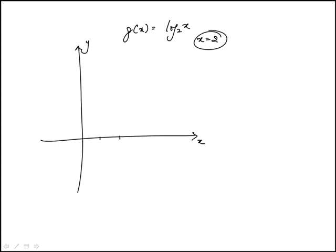be 1, so somewhere here. When x is 1 this would be 0, and then as we go to values less than 1 it's going to become negative, something like that. And then as we increase x it will increase